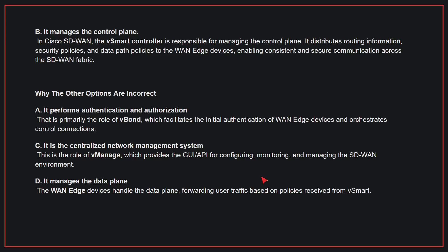Why the other options are incorrect? A: That is primarily the role of vBON, which facilitates the initial authentication of WAN-edge devices and orchestrates control connections. C: This is the role of vManage, which provides the GUI or API for configuring, monitoring, and managing the SD-WAN environment. D: The WAN-edge devices handle the data plane, forwarding user traffic based on policies received from vSmart. Therefore, the correct answer is B.